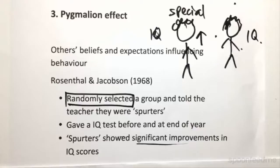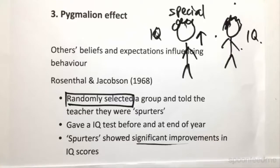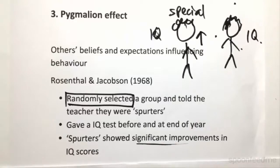So, just as a recap: this video was about stereotypes. Implicit stereotypes result from a priming effect which affects our behavior through unconscious associations. Self-fulfilling prophecies are when our own beliefs and expectations influence our behavior. And the Pygmalion effect is kind of the other way around, where others' beliefs and expectations influence behavior. Alright guys, thanks, see you next video.